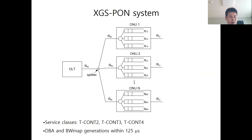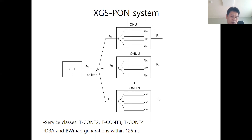The XGS-PON system consists of one OLT and N ONUs, supporting multiple service classes on each ONU as a buffer for each service class. The service class is called T-CON, or traffic container type, in the XGS-PON system. In this paper, only T-CON types 2, 3, and 4 are considered. T-CON type 2 is assured traffic in which transmission bandwidth allocation is guaranteed. T-CON type 4 is best effort traffic.